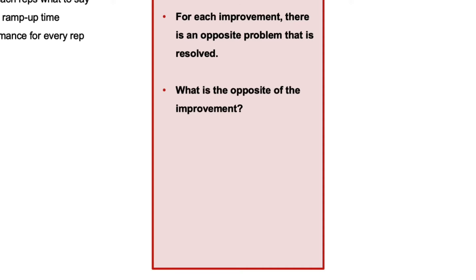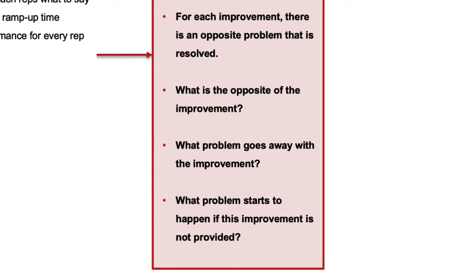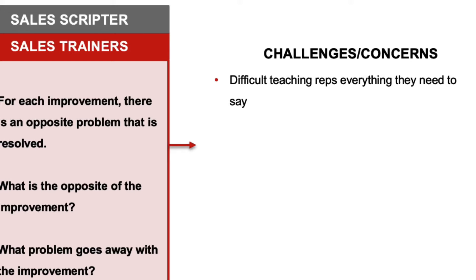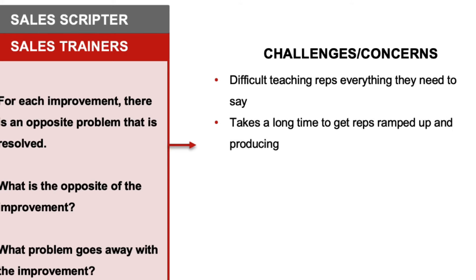We look at each improvement one by one and ask: what is the opposite of that improvement? What is the problem that goes away when we create that improvement, or what problem starts to happen if the customer does not buy and cannot incorporate that improvement? Going through this for SalesScripter with sales trainers in mind, we can come up with: sales trainers find it difficult to teach reps all the different things they need to say and ask; it can take a long time to ramp up new sales hires and get them producing; and in most sales organizations, there's usually not enough reps performing well.